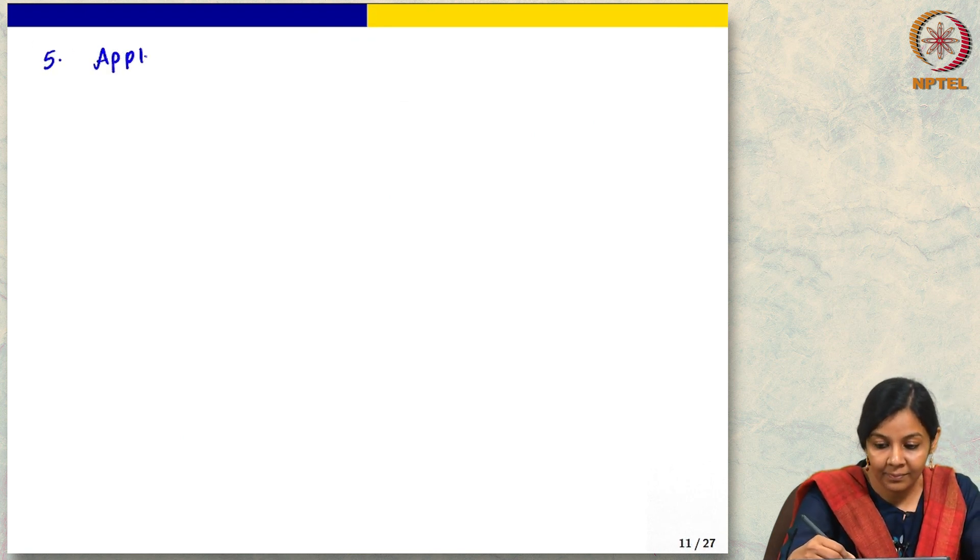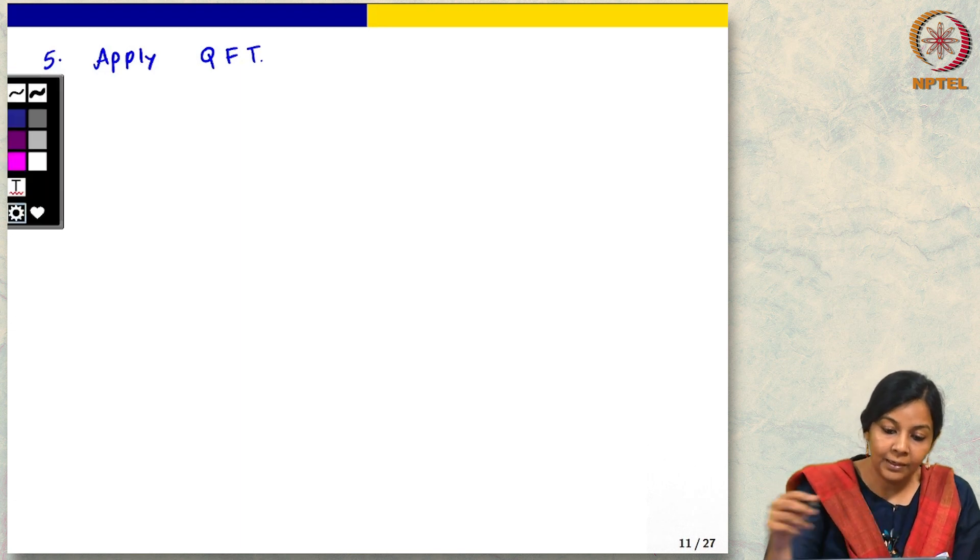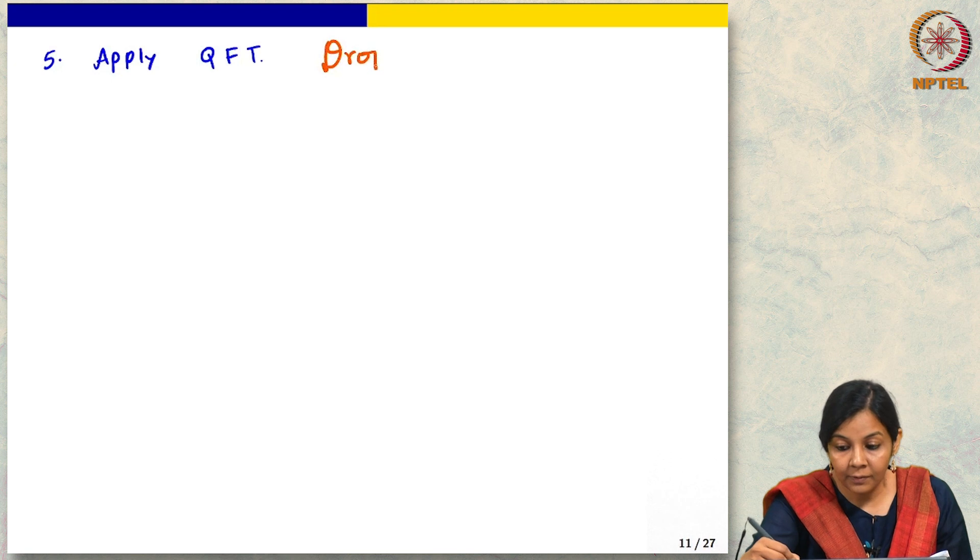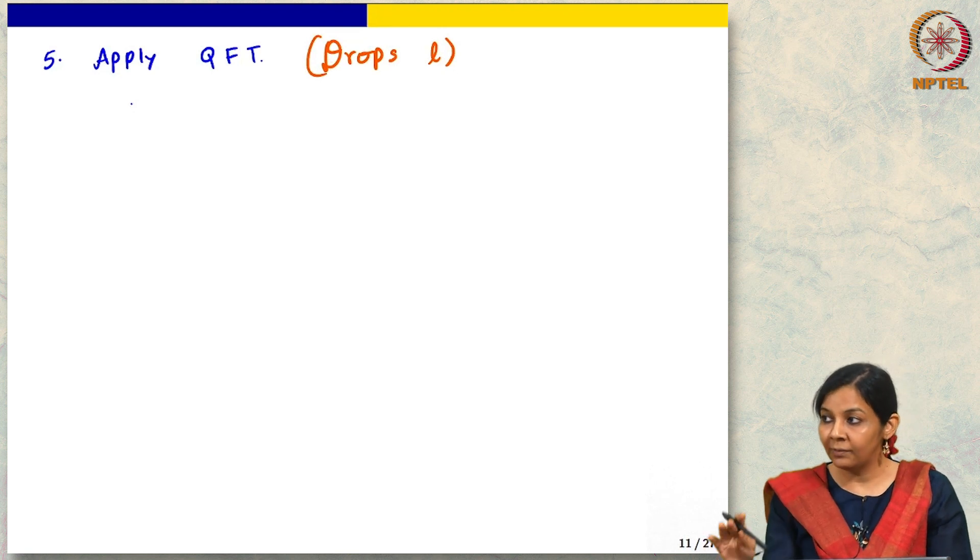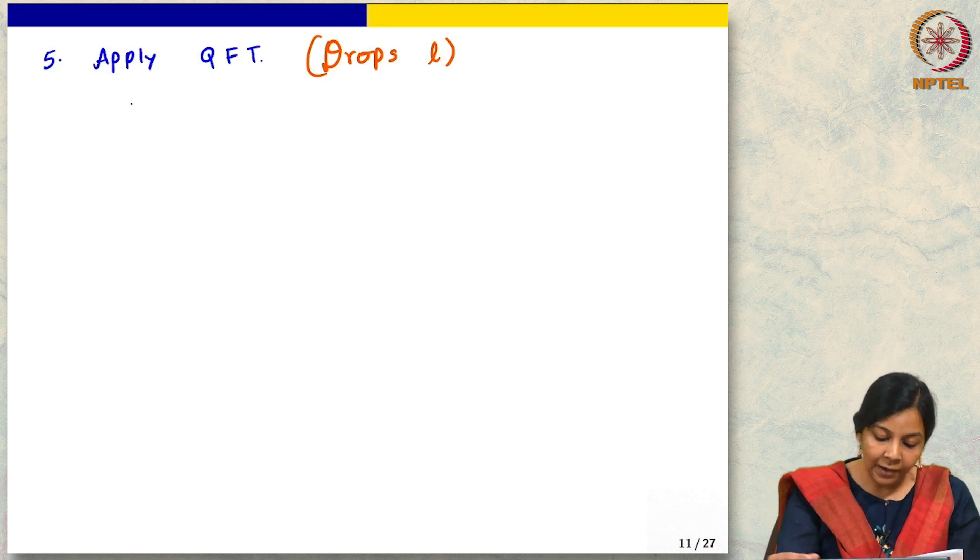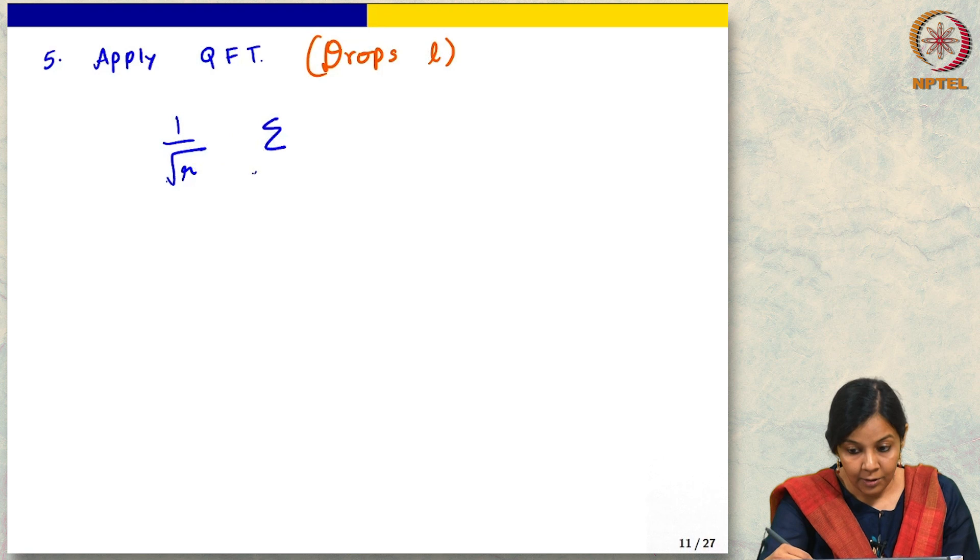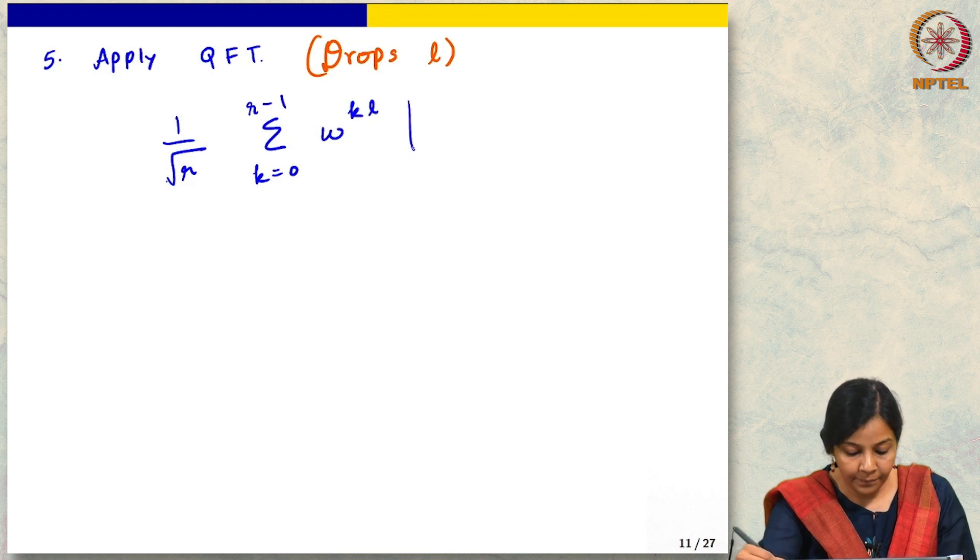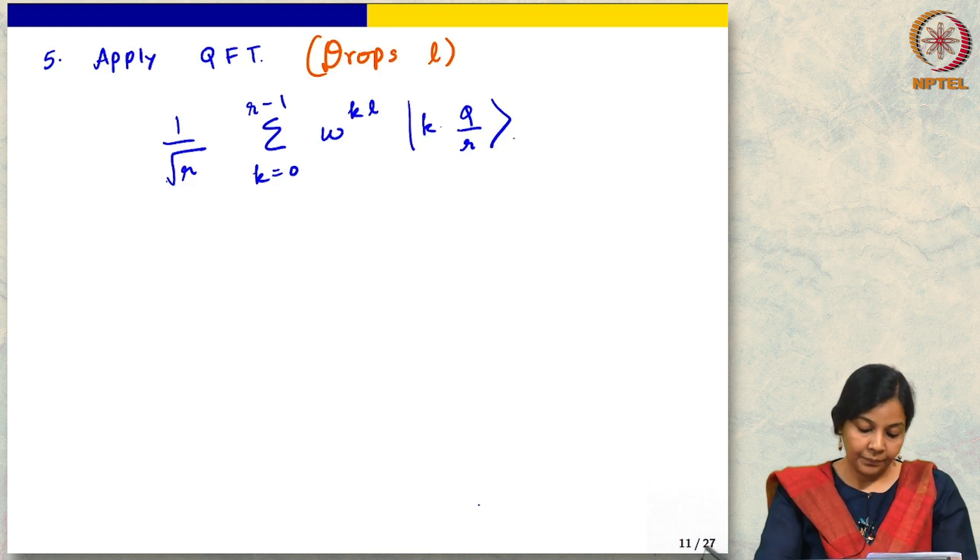Apply QFT, and the very important thing is that this drops L. We talked about this quite a lot while doing Simon's algorithm—that it becomes independent of the color. Having applied the QFT, what am I going to get? I am going to get something like this: 1 over square root R, summation k equals 0 to R minus 1, omega to the kL, k Q over R.